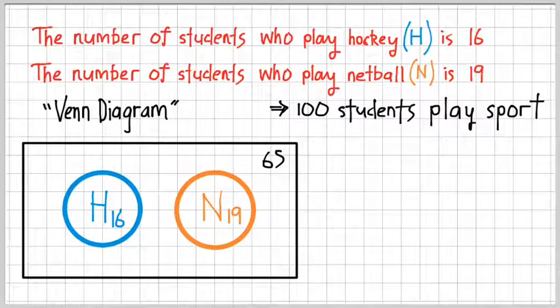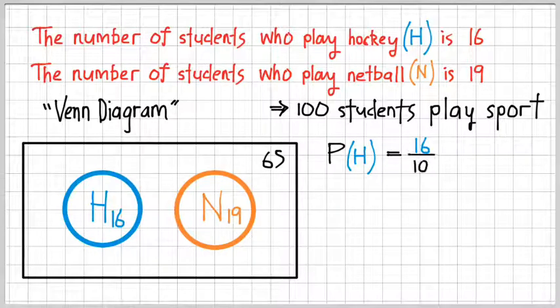So what we can do from this point forward is we can calculate some probabilities. We're going to calculate the probability of a student playing hockey. And that equals 16 divided by the total number of outcomes, or the total number of students in this case, which is 100. And as a decimal, that ends up being 0.16.